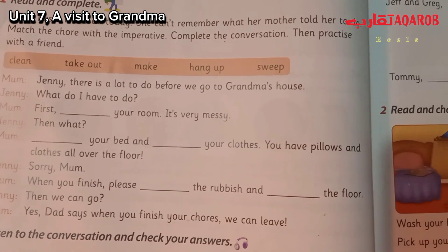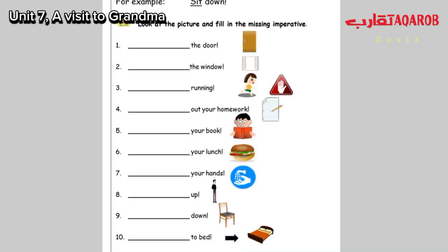That says: when you finish your chores, we can leave. Now we have to look at the picture and fill in the missing imperative verb from the box. Number one: close the door. Number two: open the window. Number three: stop running. Number four: take out your homework.